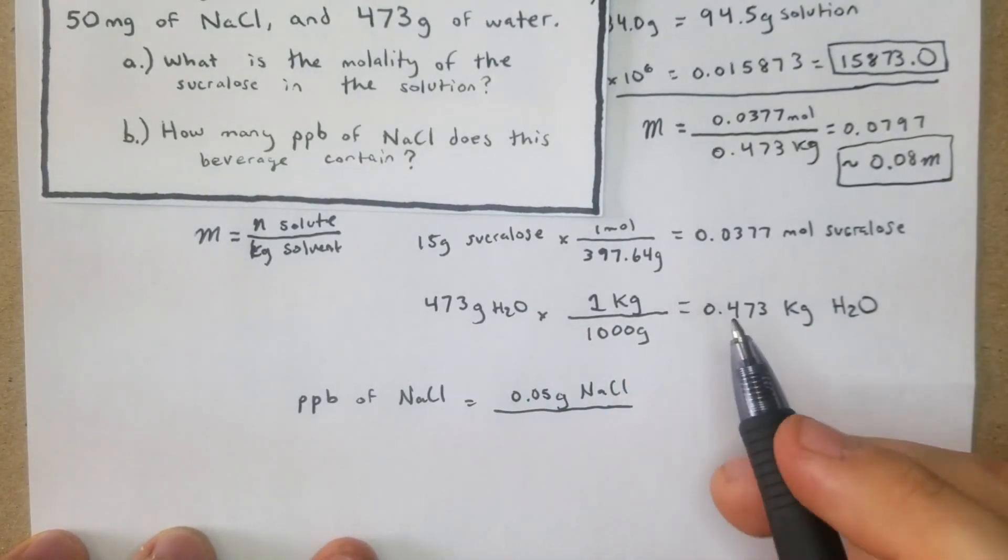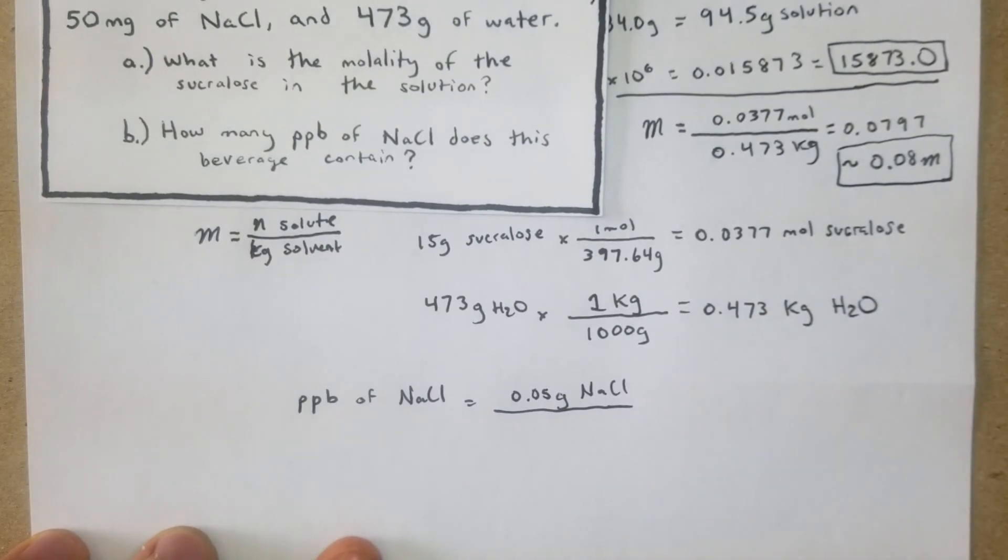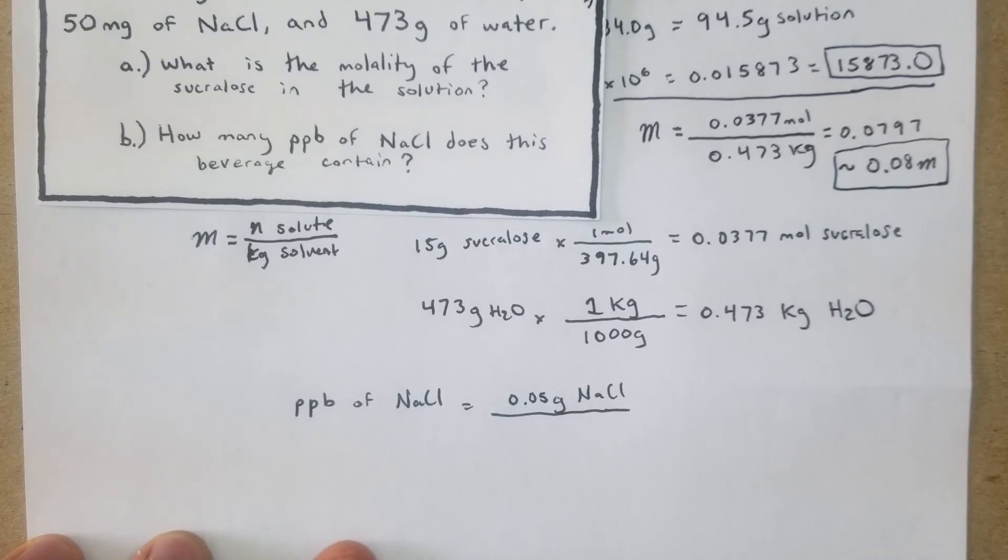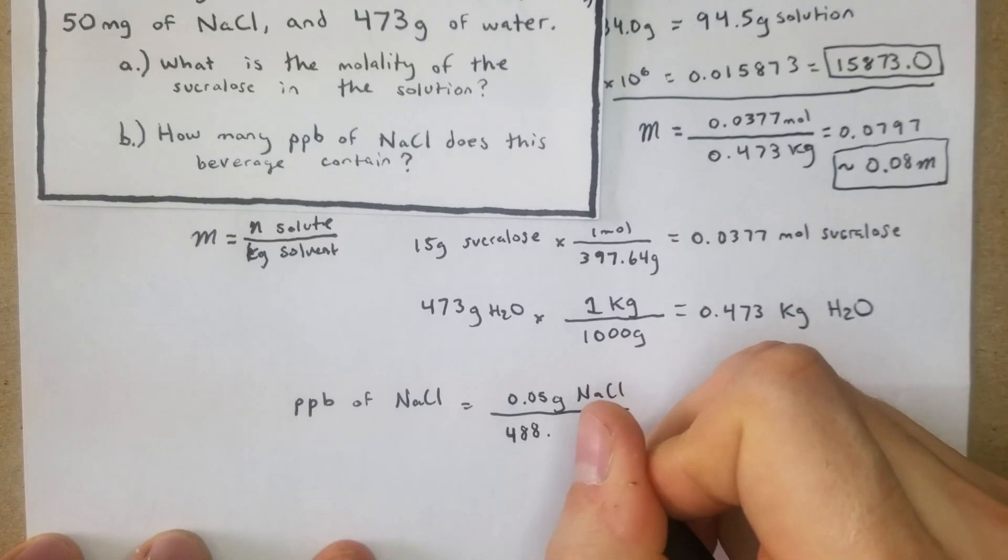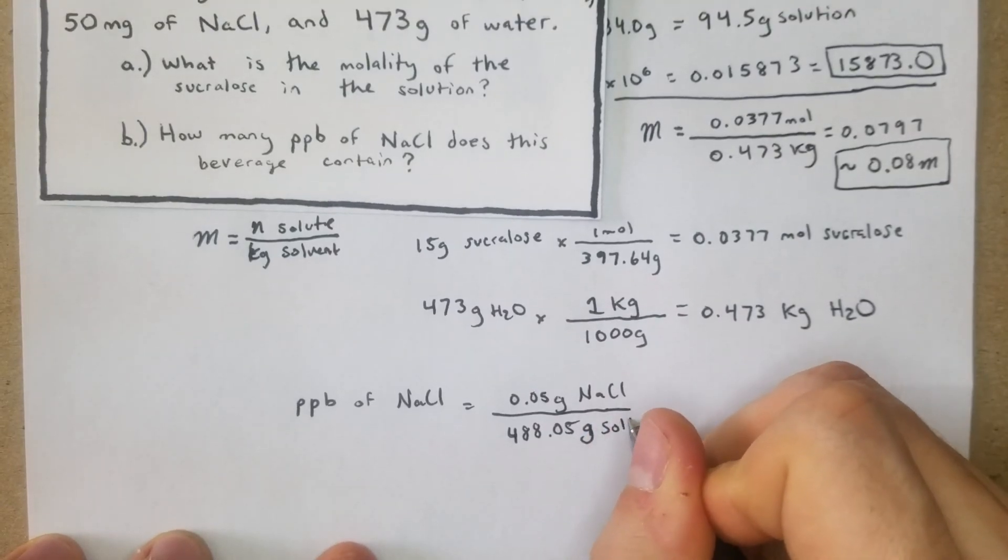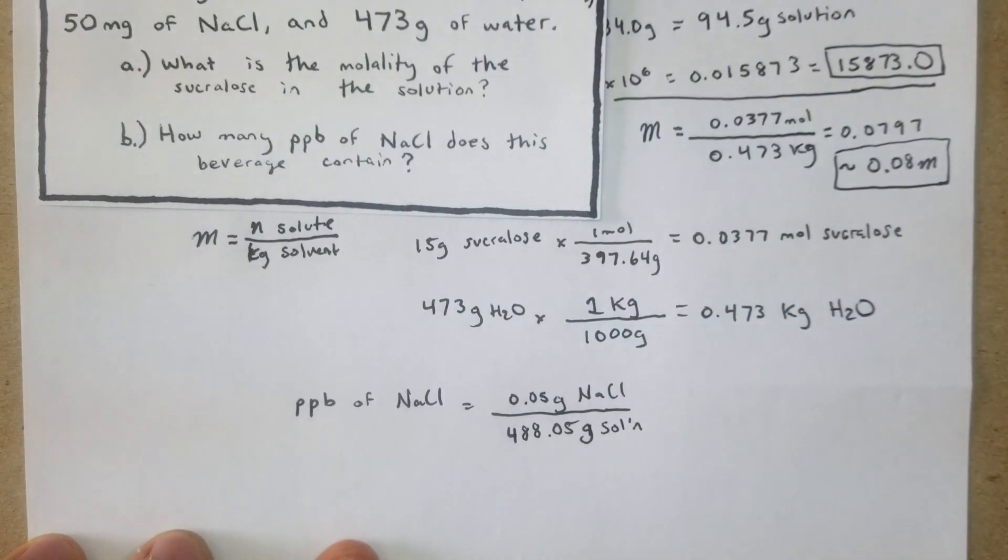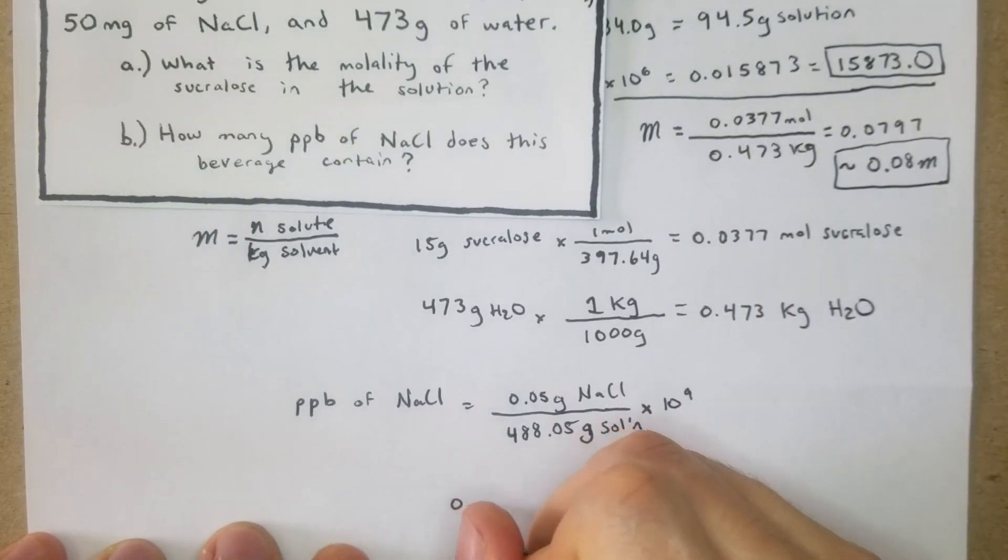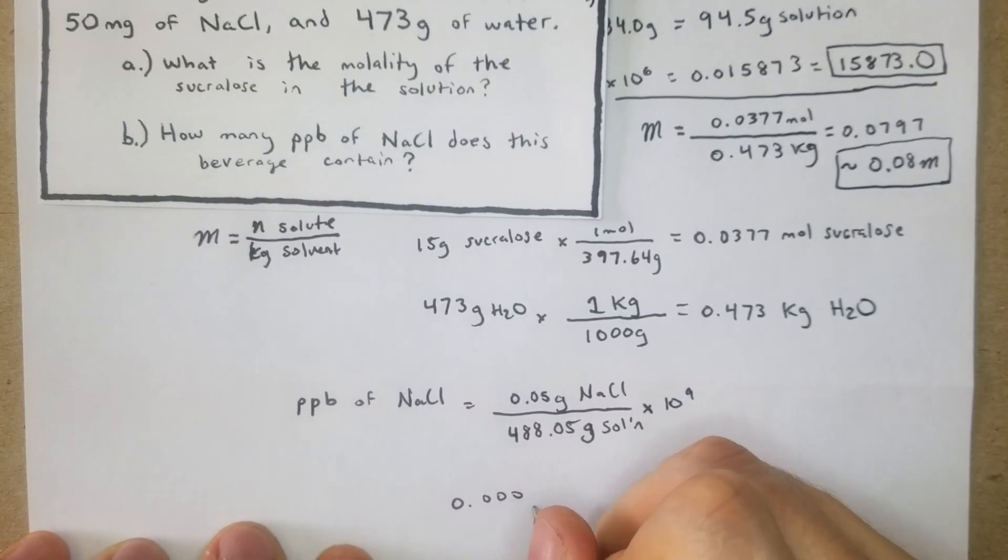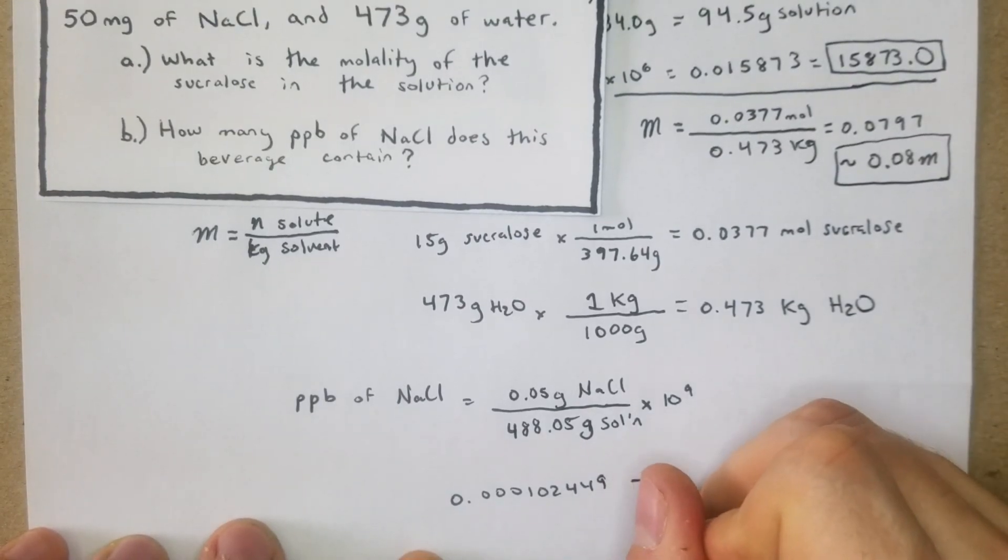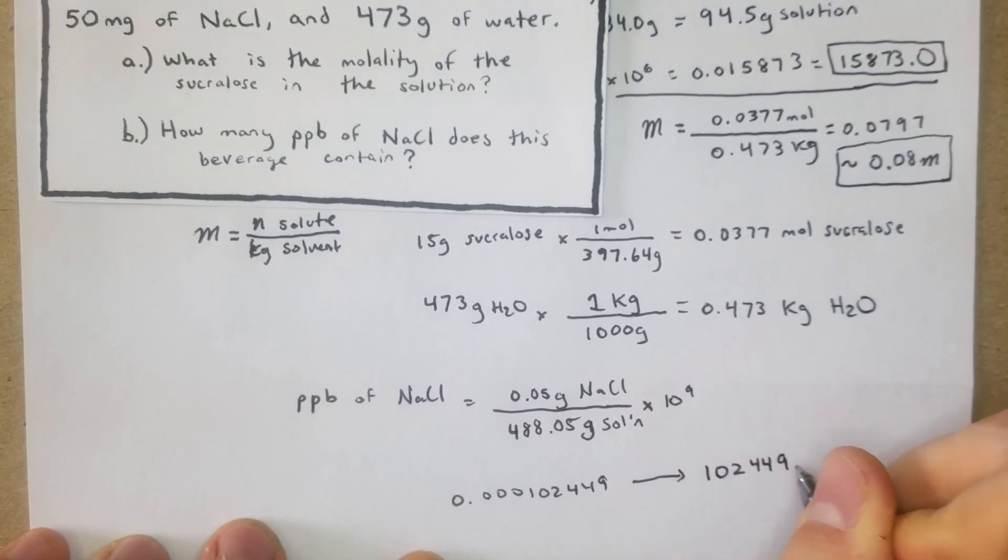We have 15 plus 473, which is 488.05 grams of solution. So we're getting 0.05 divided by 488.05, which gives us a very small number initially: 0.0001024449. But that's times 10 to the ninth, so moving it over 9 places gives us 102,449 as our final answer in ppb.